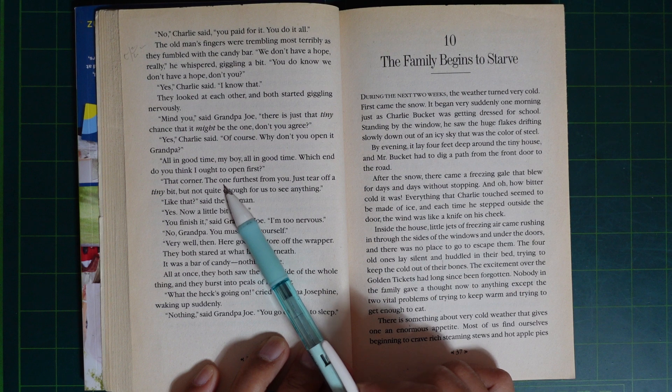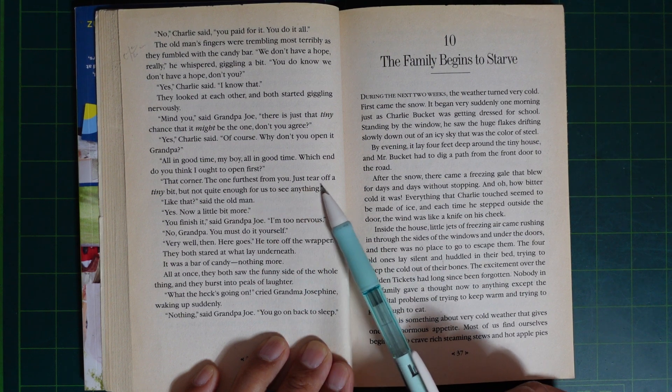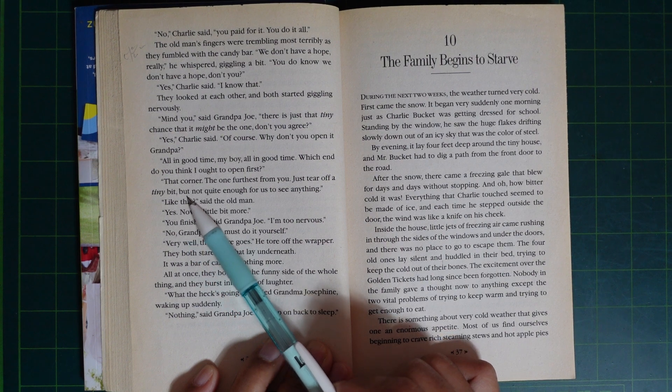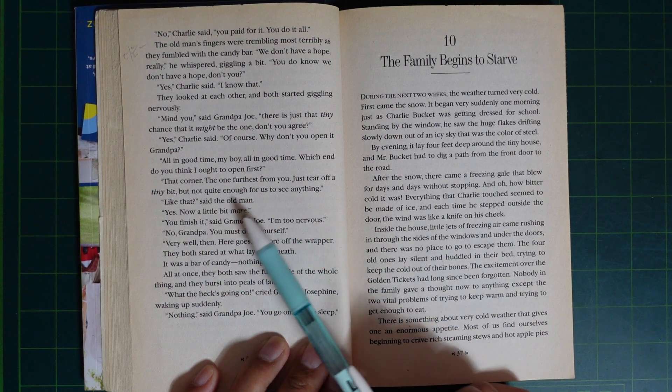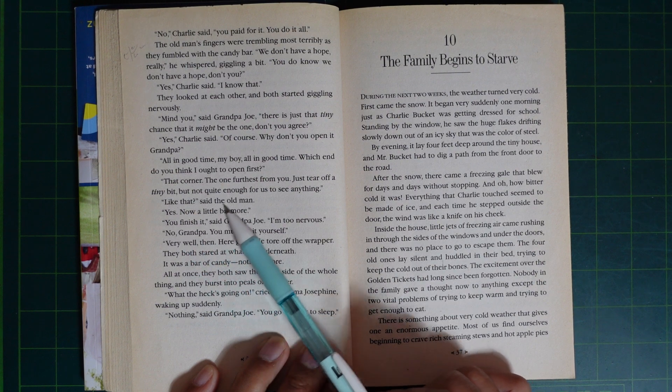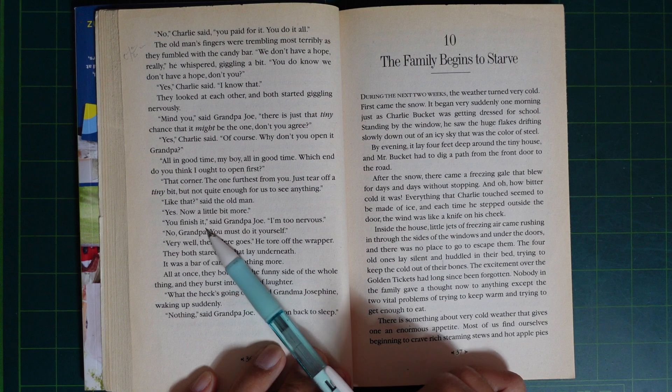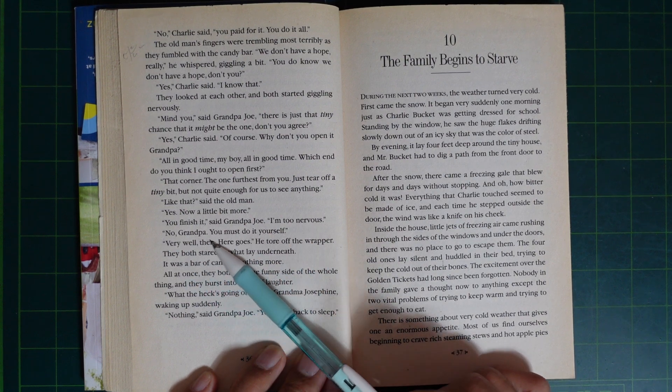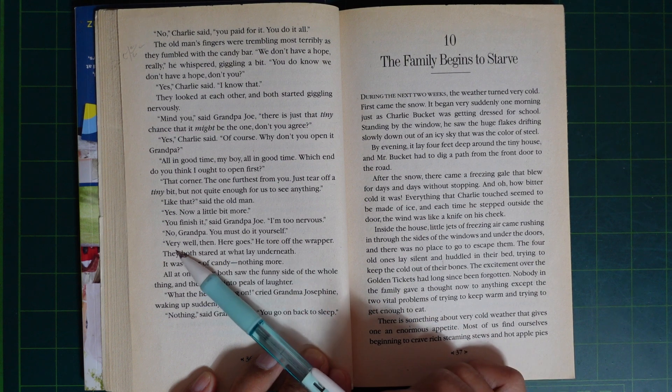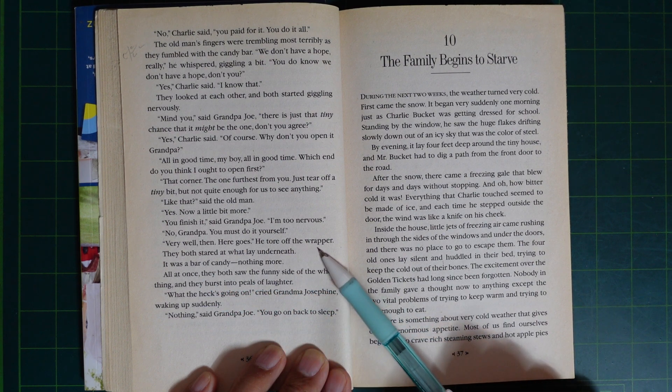That corner. The one furthest from you. Just tear off a tiny bit, but not quite enough for us to see everything. Like that, said the old man. Yes, now a little bit more. You finish it, said Grandpa Joe. I'm too nervous. No, Grandpa. You must do it yourself. Very well. Here goes. He tore off the wrapper.